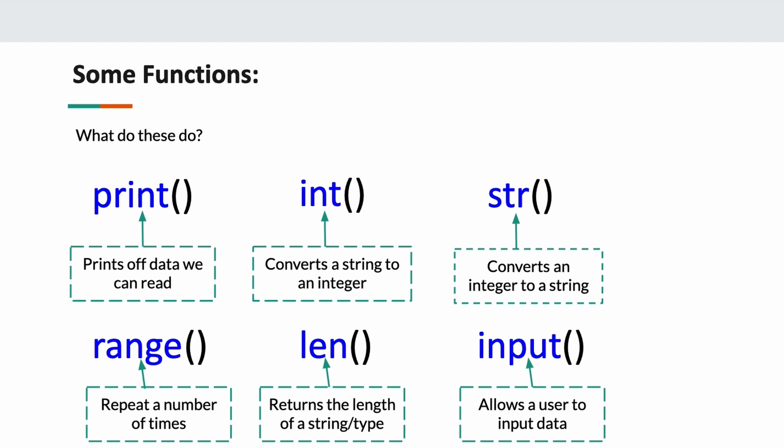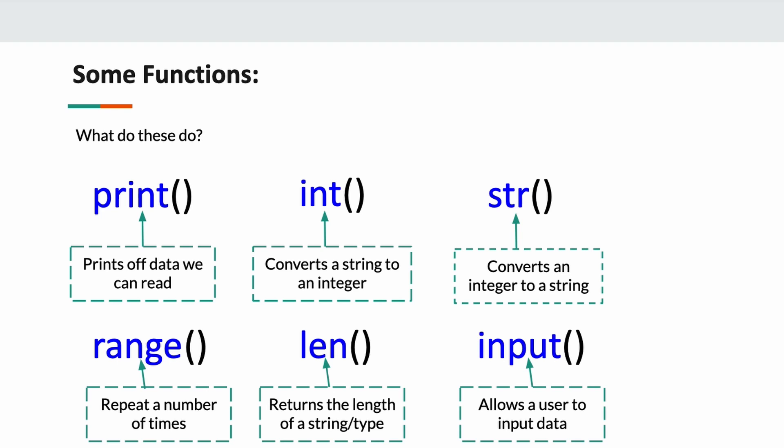The last thing I want to talk about are functions. Here are some pre-built Python functions already built into Python that we can use. If you're new to Python, you don't know any of these yet — that's okay. But if you've used Python before, these should look familiar. We have print, input, int, string, range. A function is reusable chunks of code that we can call upon as we need them in our program. Now I want to take you over into VS Code, where we can code, and show a few examples of this.